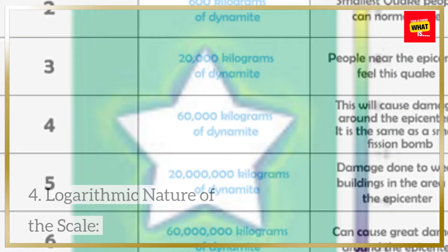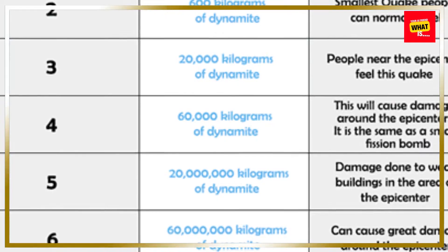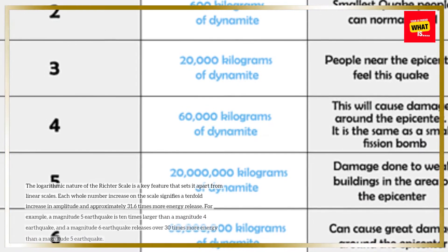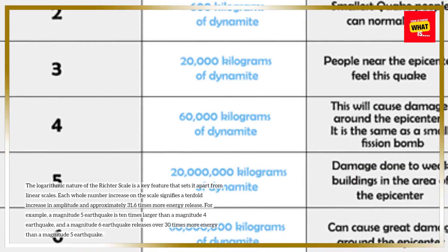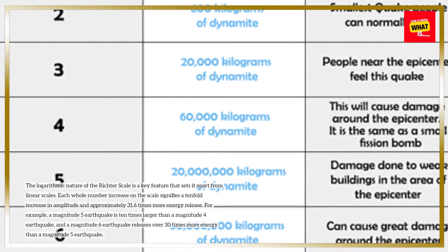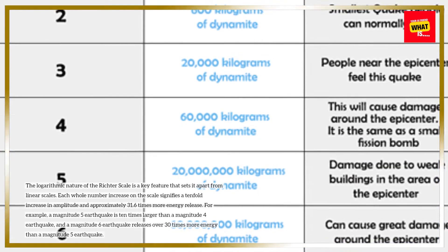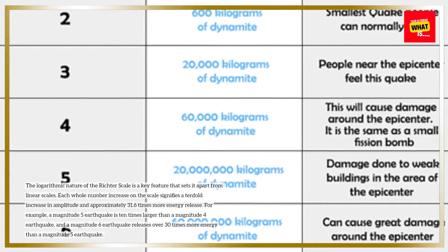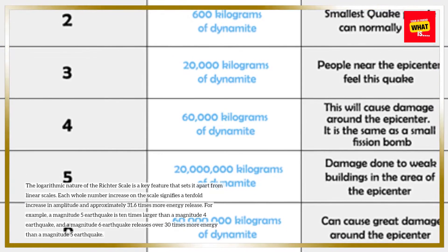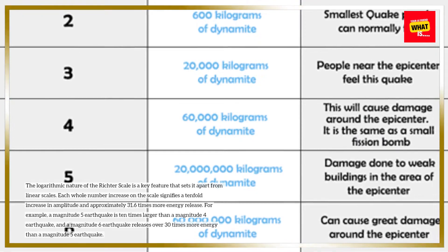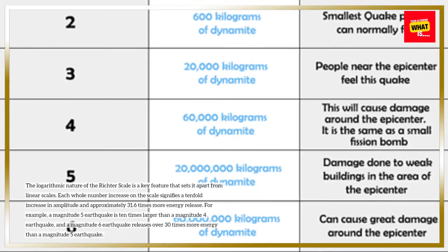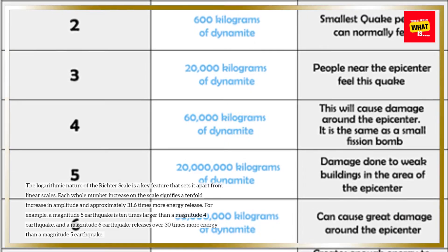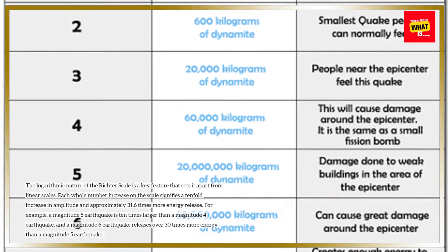The logarithmic nature of the Richter Scale is a key feature that sets it apart from linear scales. Each whole number increase on the scale signifies a tenfold increase in amplitude and approximately 31.6 times more energy release. For example, a magnitude 5 earthquake is ten times larger than a magnitude 4 earthquake, and a magnitude 6 earthquake releases over 30 times more energy than a magnitude 5 earthquake.